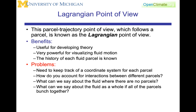The Lagrangian point of view is the parcel trajectory point of view. It is the idea of what is the fluid doing following a parcel. You have an isolated parcel and that fluid is moving around — it might be heating or cooling from radiative processes — but the parcel is moving around and we are keeping an accounting of what's going on with that parcel. This is a very powerful way for developing theory and for visualizing fluid motion, and the history of each fluid parcel is known.